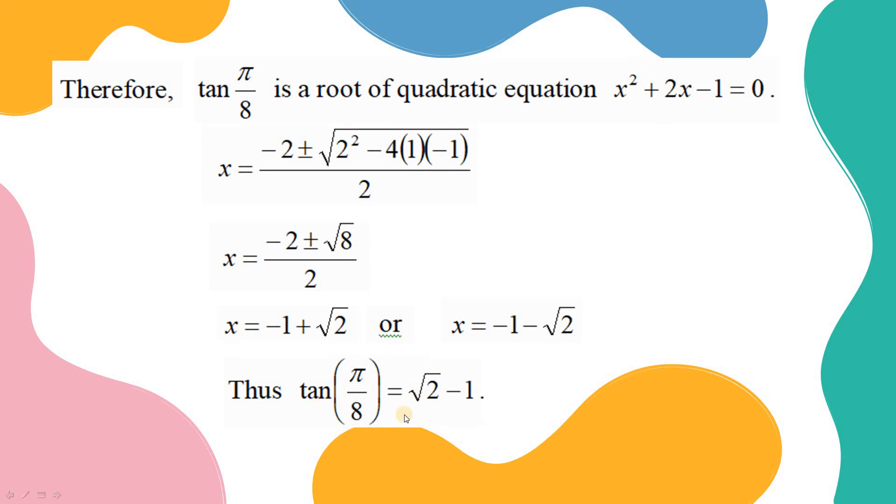Therefore, we have tangent pi over 8 equals square root of 2 minus 1. That is all the proof of the value of tangent pi over 8.